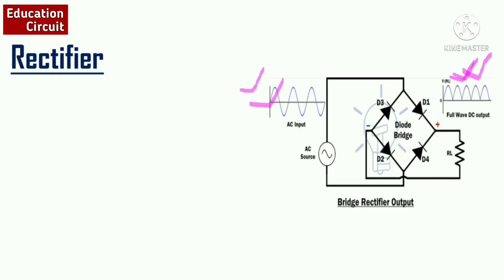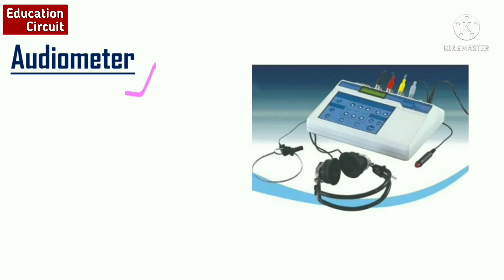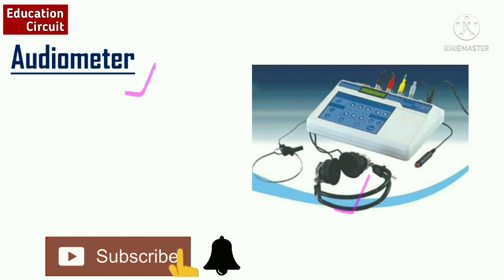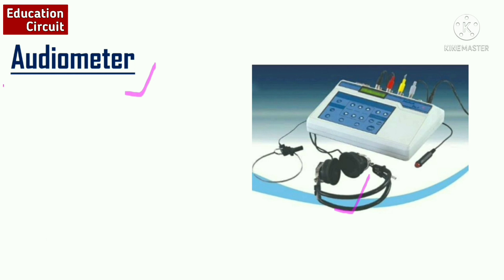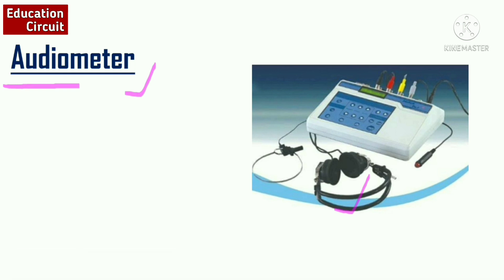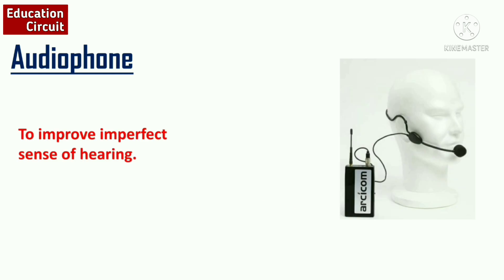Now let's see the most important instruments related to sound measurement. First is the audiometer. An audiometer is used to measure the ability of hearing — the hearing power. We wear headphones and then measure up to what intensity we can hear. It is easy to memorize: you can take 'audio' from 'audiometer', and audio means related to voice, so it measures our capability of hearing sound. Next is the audiophone. An audiophone is used to improve imperfect sense of hearing — if somebody cannot hear properly, it helps them hear more clearly.